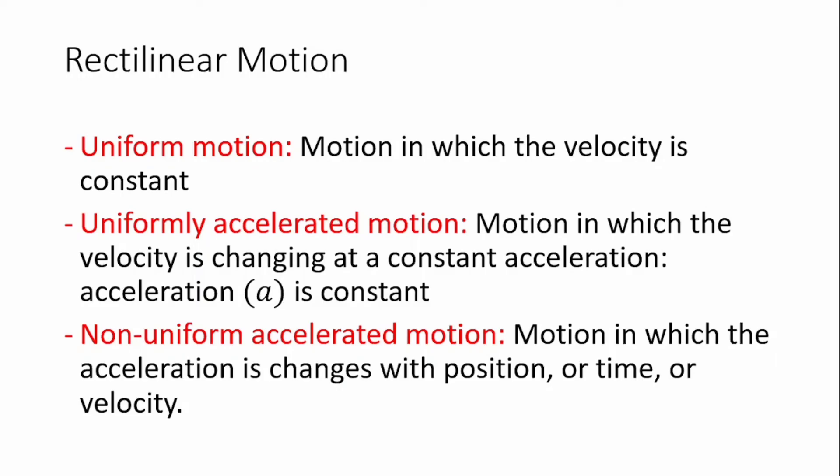Rectilinear motion could be uniform motion, that is to say when the motion has constant velocity or the acceleration is zero. It could be uniformly accelerated motion, that's the motion in which the velocity is changing at a constant acceleration, that's acceleration a is constant. And finally, the non-uniform accelerated motion, a motion in which the acceleration changes with either position or time or velocity.